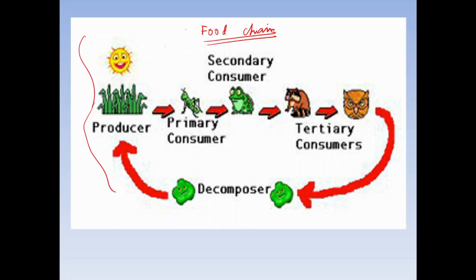Instead of energy flow, what is flowing? Basically, food. A linear relationship among the different biotic components of an ecosystem is established. Basically, this is the food chain.